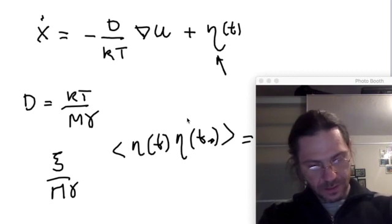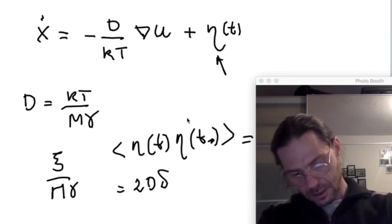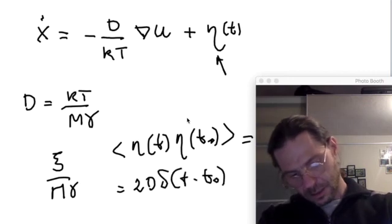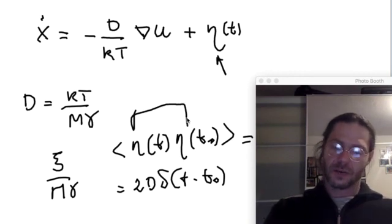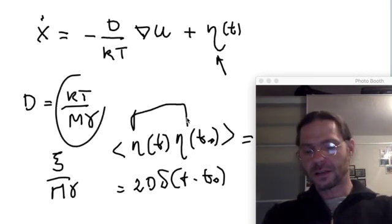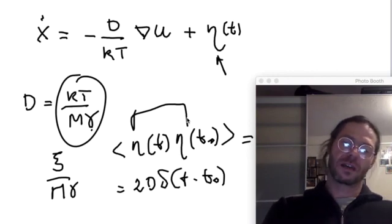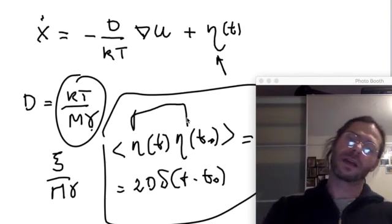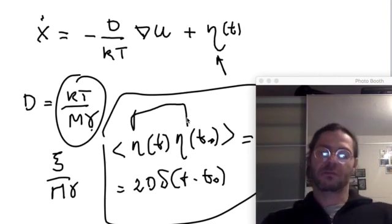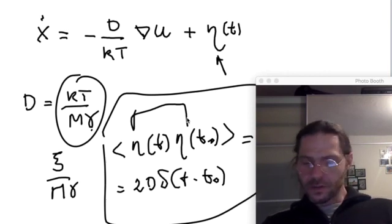The fluctuation of the stochastic force is directly related to the dissipation induced by the presence of the bath. This is often viewed as yet another fluctuation dissipation theorem. Some comments are in order on this equation.